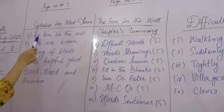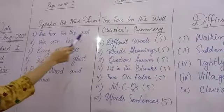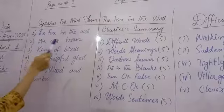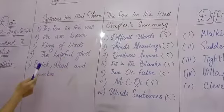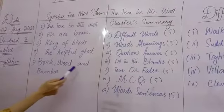The first chapter is the fox in the well. Number 2, we are brave. Number 3, king of birds. Number 4, the helpful ghost. And the last one is brick, wood and bamboo.